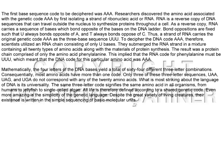To decipher the DNA code AAA, therefore, scientists utilized an RNA chain consisting of only U bases. They submerged the RNA strand in a mixture containing all 20 types of amino acids, along with the materials of protein synthesis. The result was a protein chain comprised of only the amino acid phenylalanine. This implied that the RNA code for phenylalanine must be UUU, which meant that the DNA code for this particular amino acid was AAA.